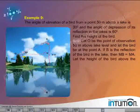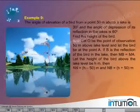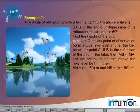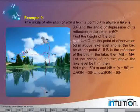Let the height of the bird above the lake be equal to h meters. Then AN is equal to h minus 50 meters, and NB is equal to h plus 50 meters. Angle AON is equal to 30 degrees and angle BON is equal to 60 degrees.